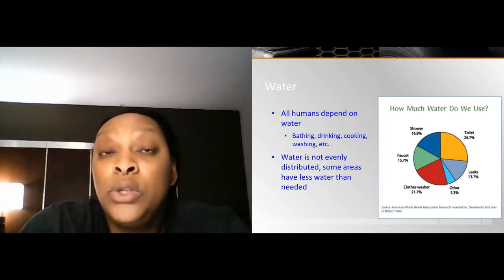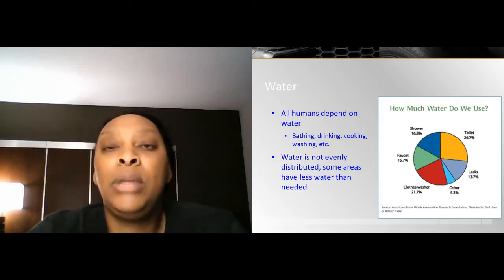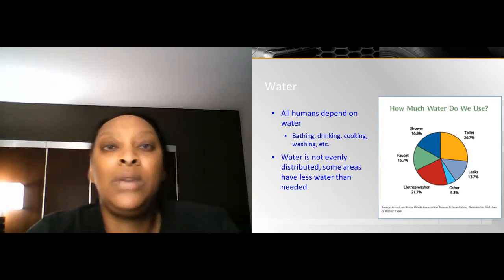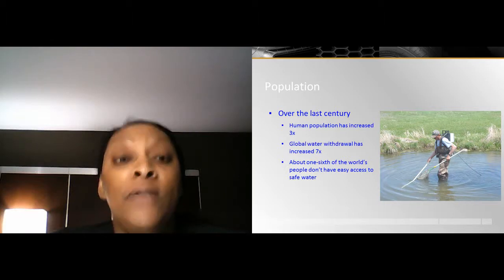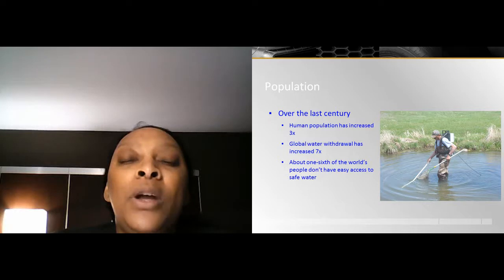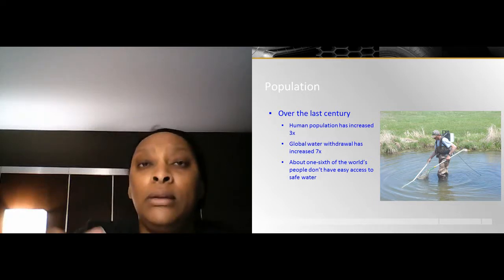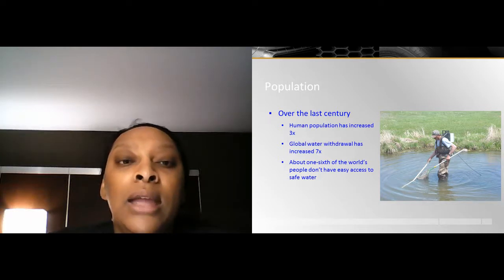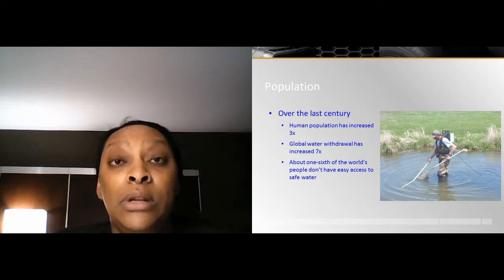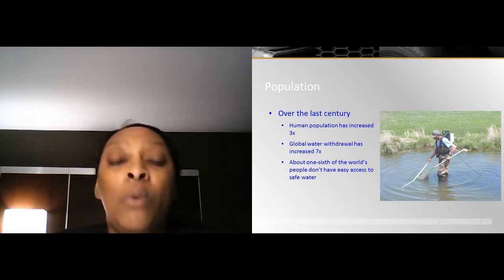Another reason is water pollution — if there's no drinkable water nearby, that could be an issue. If there is water nearby, it could be ocean water that can't be properly desalinated. Over the last 100 years, the human population has grown three times — tripled in size. Global water withdrawal has increased seven times what it was 100 years ago. About one-sixth of the world's people don't have access to safe water — that's a lot of people who do not have that access.